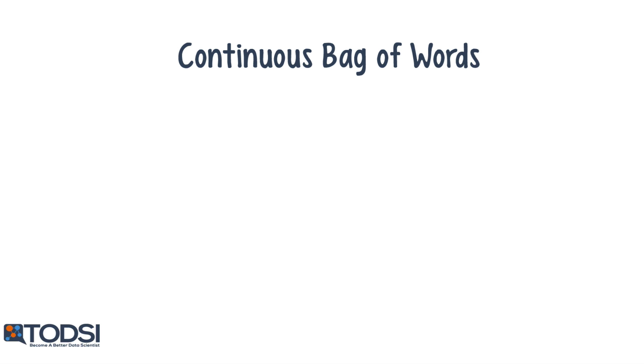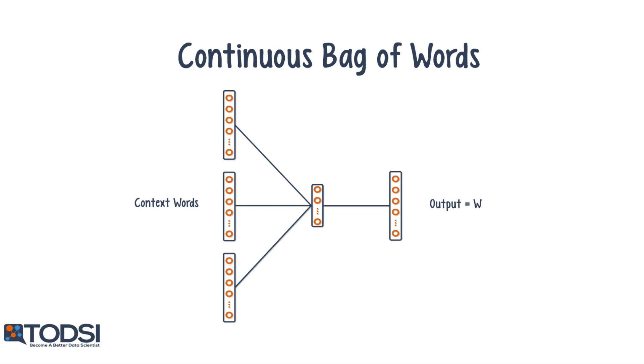In this model, the context is used as a set of features to predict what W might be, in a type of fill-in-the-blanks application. A shallow three-layered neural net is used for this task, with the input layer containing one-hot vectors for the context words, and the output layer firing the predicted target word, W.